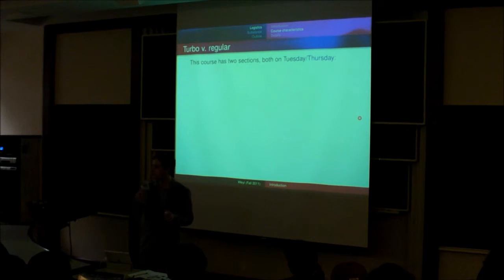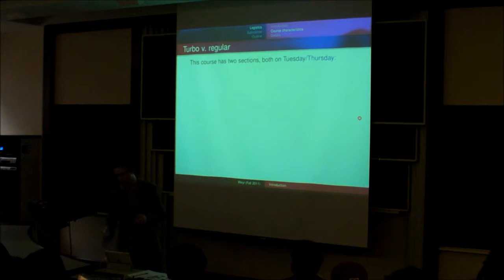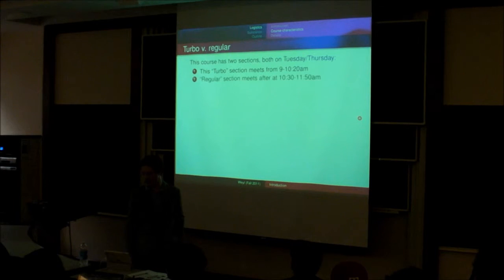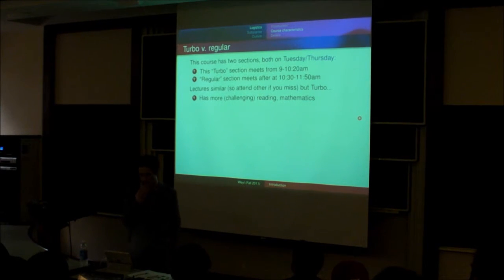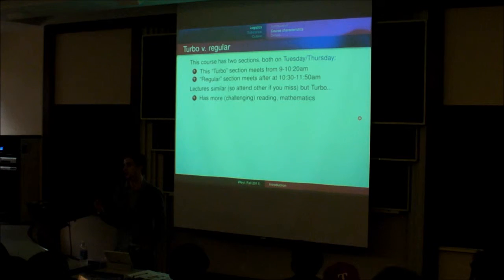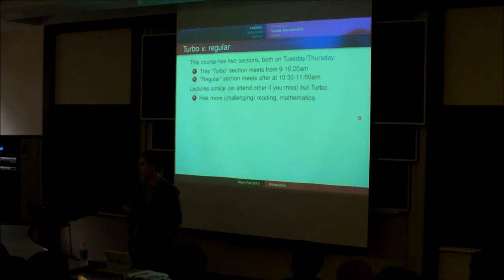Okay. So the course has two sections. Both meet on Tuesday and Thursday. The Turbo section is the one that you're sitting in right now from 9 to 10:20. The regular section meets from 10:30 to 11:50. Lectures are going to be quite similar. So if you have to miss one, you can attend the other. But the Turbo lecture is going to differ in a few ways. So one way is it's going to have more challenging and more reading. And it will use a bit more abstract mathematics and spend less time going through the computational details of something for particular functional forms and algebra. We'll just focus more on sort of the broad concepts and use abstract mathematics to deal with those a little bit more.